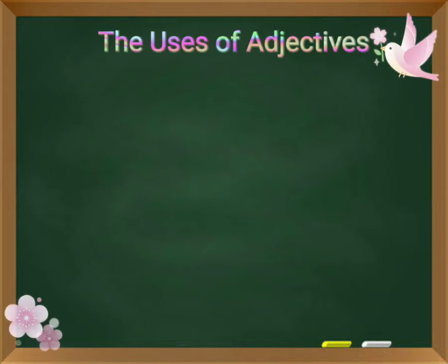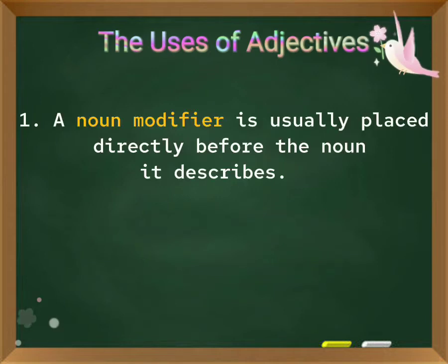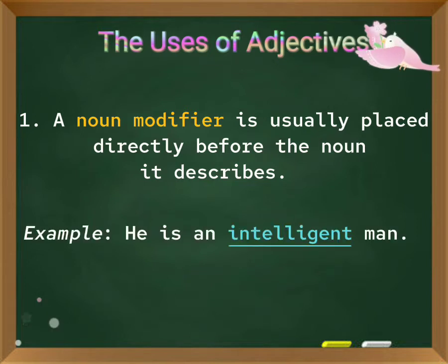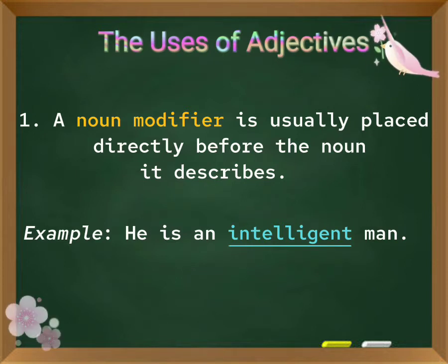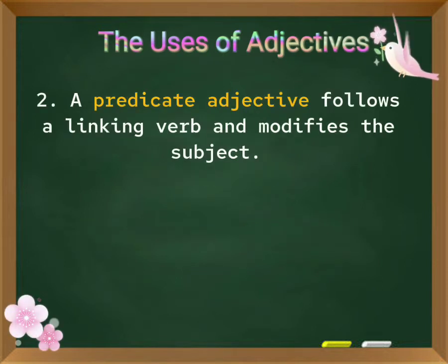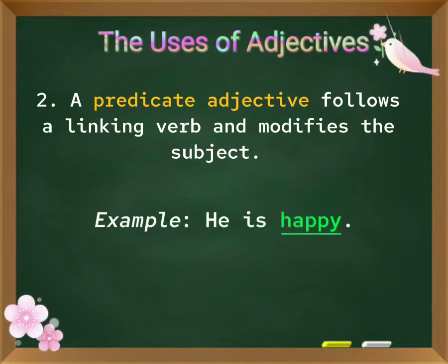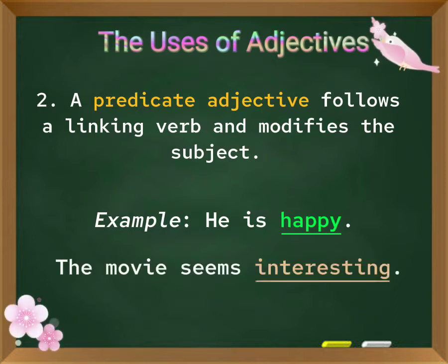The uses of adjectives. 1. A noun modifier is usually placed directly before the noun it describes. Example: He is an intelligent man. 2. A predicate adjective follows a linking verb and modifies the subject. Examples: He is happy. The movie seems interesting.